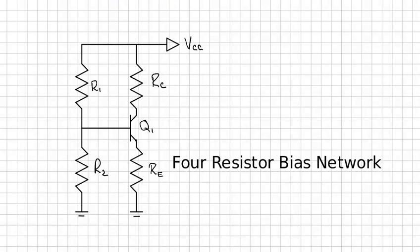Let's look at the four resistor bias network. Bipolar junction transistors have widely varying values for beta.